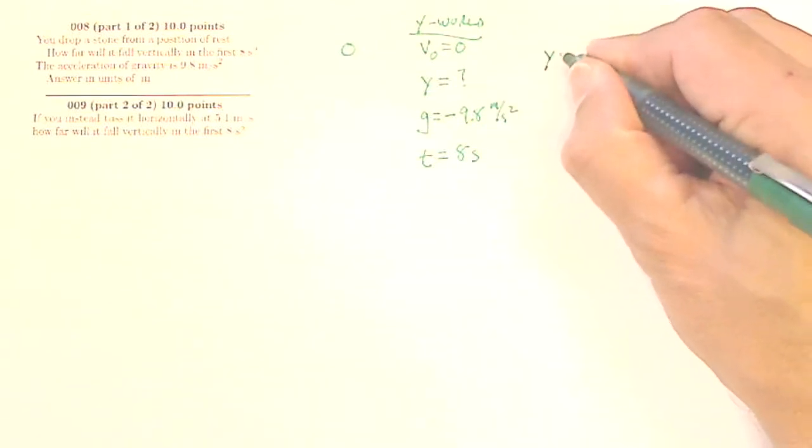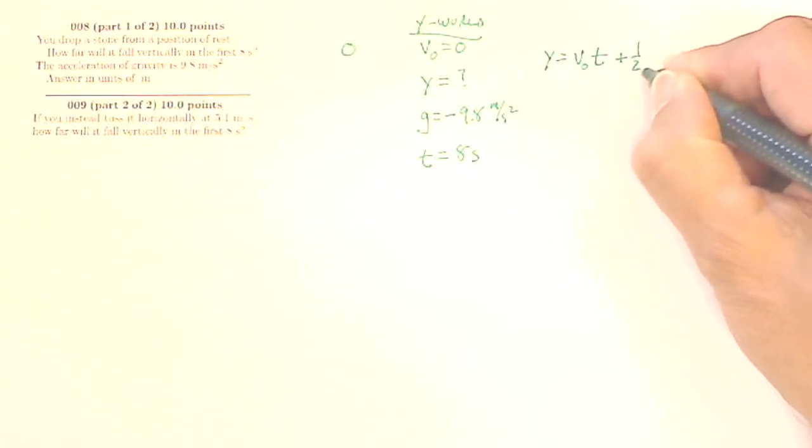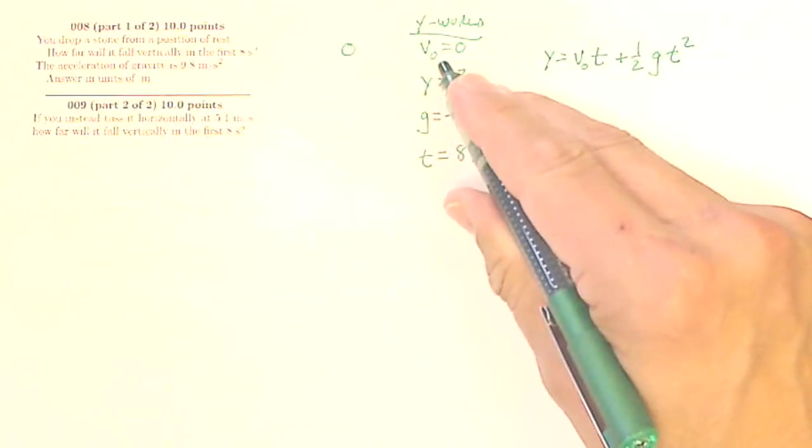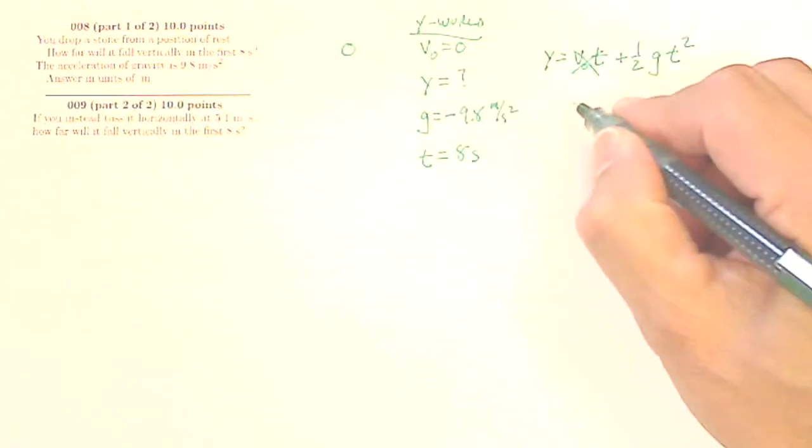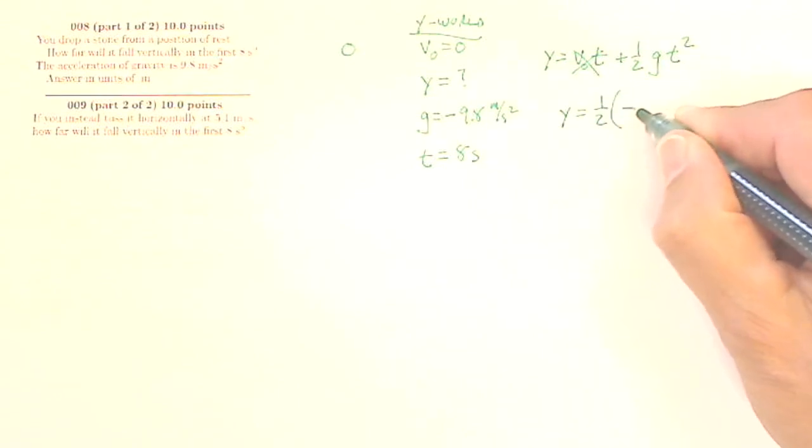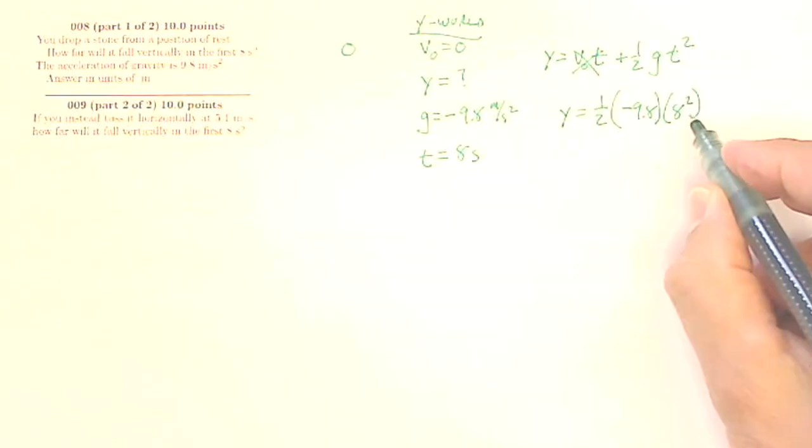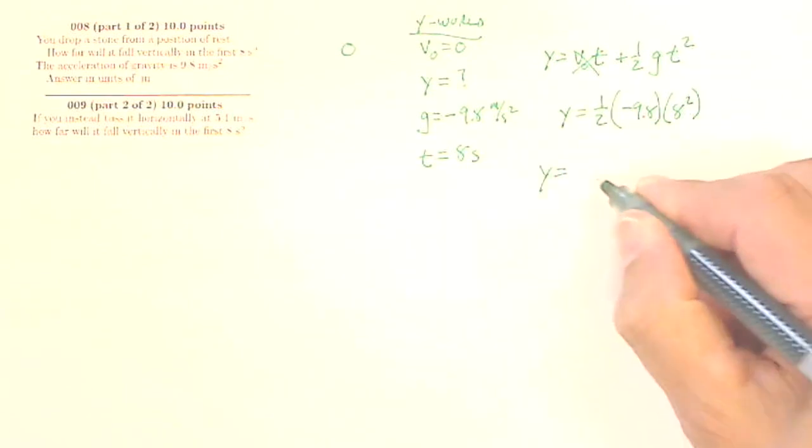So it turns out that my displacement is my initial velocity times time, plus 1 half of my acceleration times time squared. Well, my initial velocity is 0, so this goes away. So my displacement is going to be 1 half of negative 9.8 times 8 squared, my time squared. And that will give me some number.